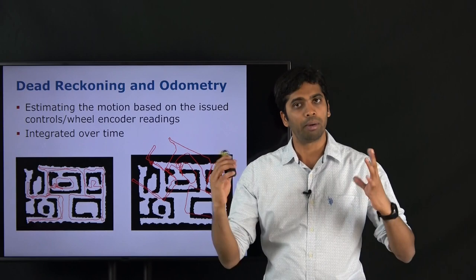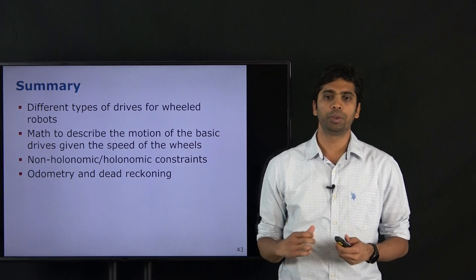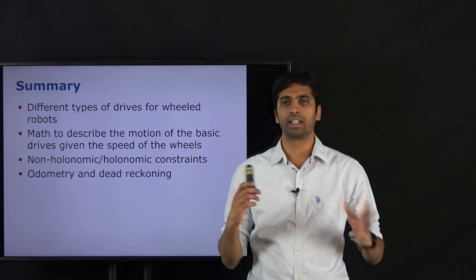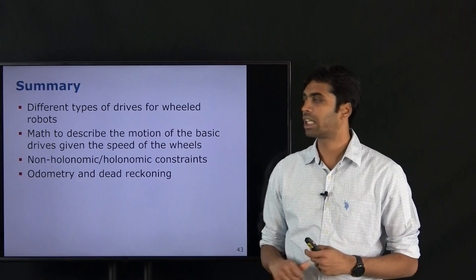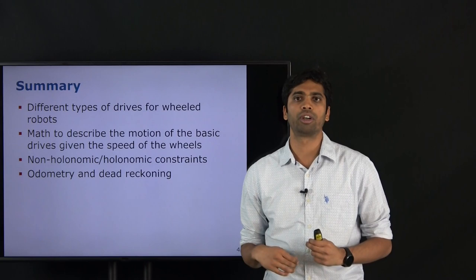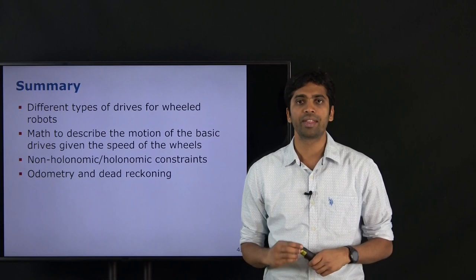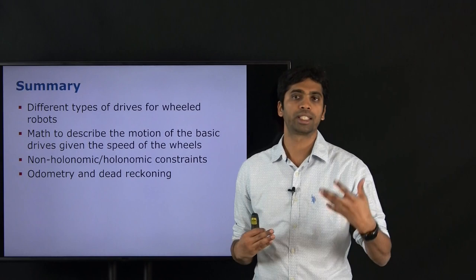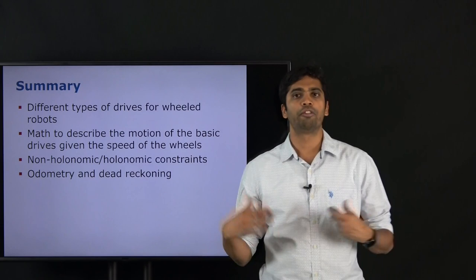In summary, today we introduced different kinds of wheeled drives — differential, Ackermann, and several more sophisticated ones. We derived the math describing motion for the differential drive and equations for the Ackermann drive to follow a trajectory smoothly. We introduced non-holonomic and holonomic constraints, which limit robot movement and are important for planning tasks. Finally, we covered odometry and dead reckoning as ways to estimate the movement that robots have done. Thank you for your attention.